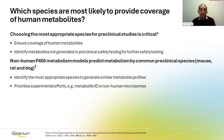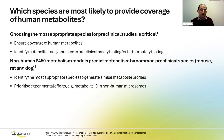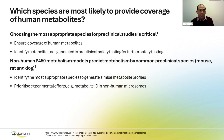To help with this, one can make predictions for non-human P450 metabolism. In our case, we have produced models of mouse, rat, and dog, and we can use these to identify the most appropriate species to generate similar metabolite profiles and hence prioritize that experimental effort.